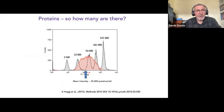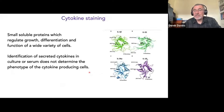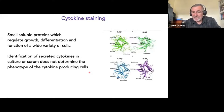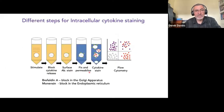The final application is intracellular cytokine staining. Cytokines are small signaling molecules often measured by ELISA, which is cell-free. In flow cytometry we prefer to keep things cellular. We stimulate our cells but block cytokine release, so the cytokines accumulate inside the cells.